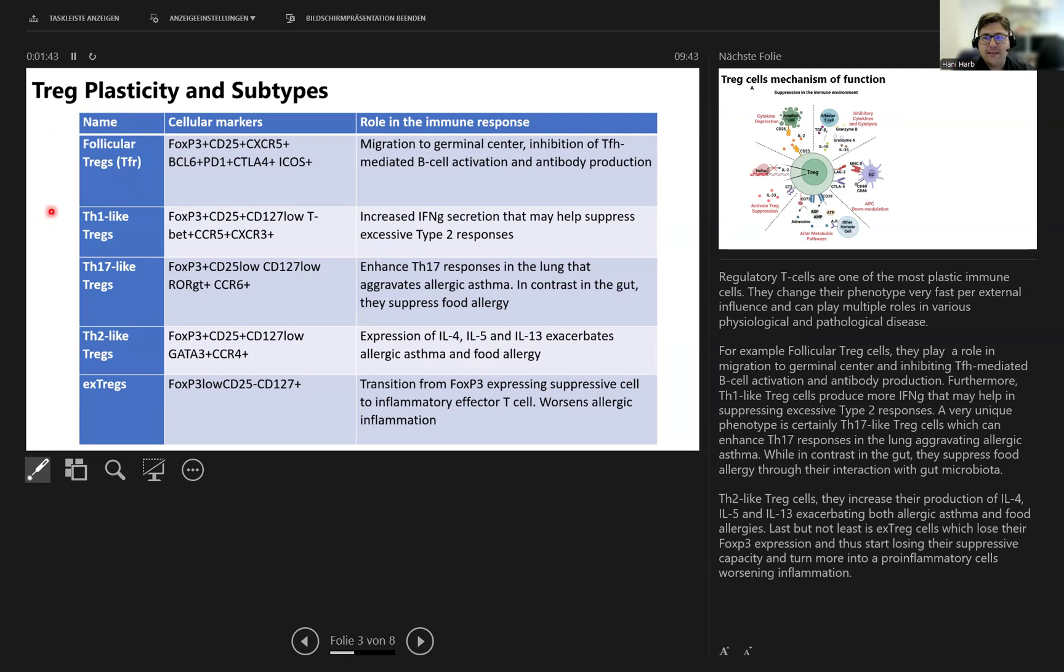Furthermore, TH1-like T-reg cells produce more interferon gamma that may help in suppressing excessive type 2 responses. A very unique phenotype is the TH17-like T-reg cells, which can enhance TH17 responses in the lung, aggravating allergic asthma.